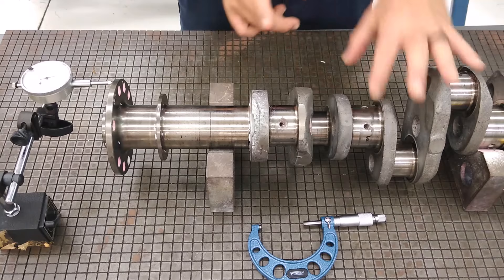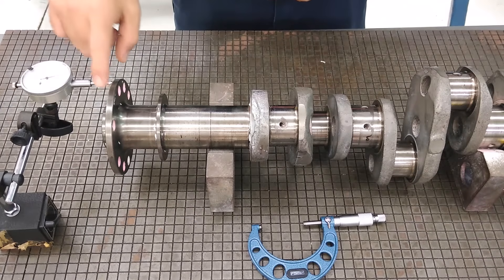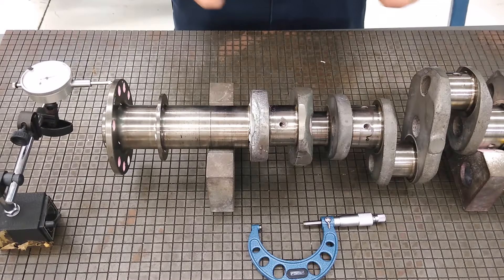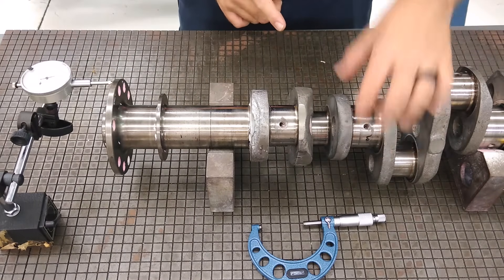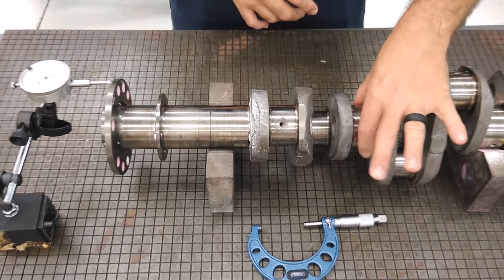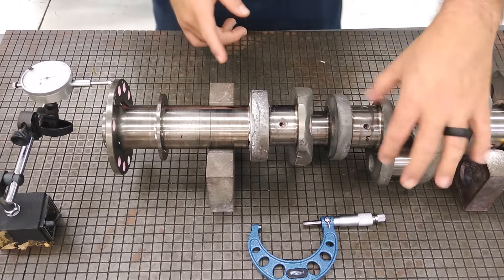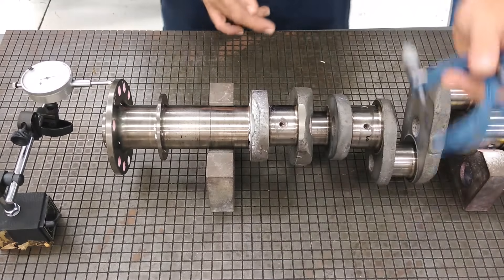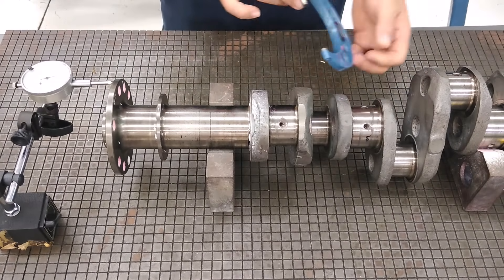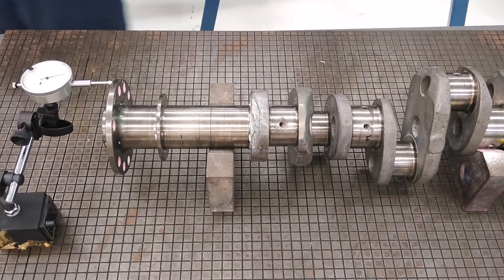And I'm going to show you how to measure run out in the bearing journals, in the propeller flange, as well as another consideration, how to measure out of round in the crank pins or the bearing journals. We're going to start, since we're set up over here, we're going to start with measuring out of round in the bearing journal. Let me bring you in closer.